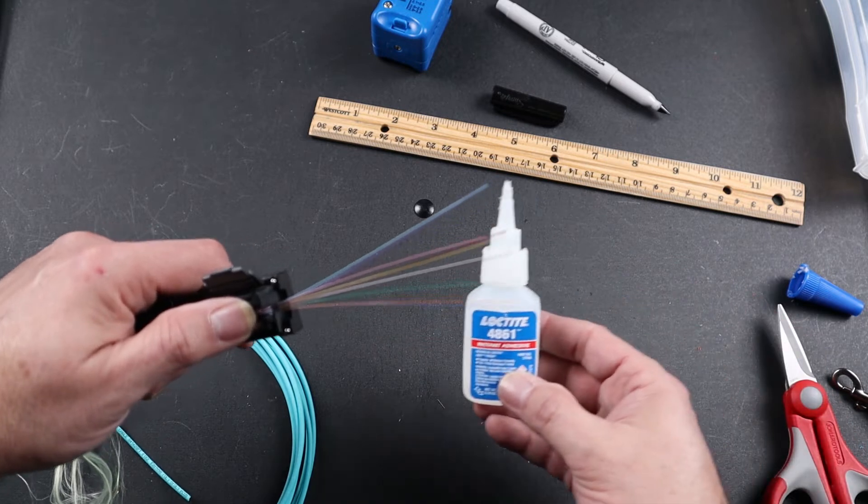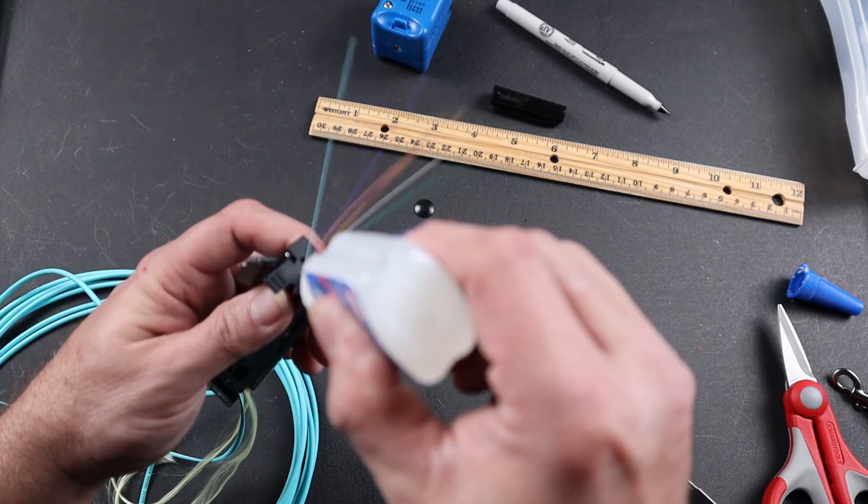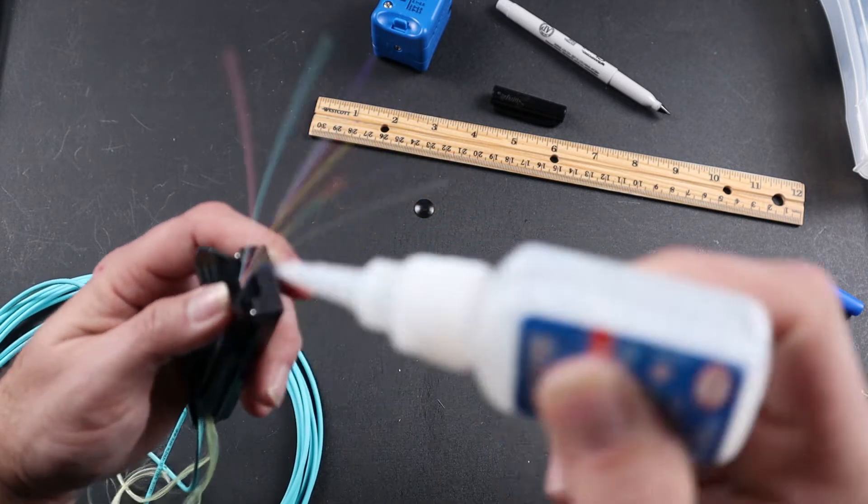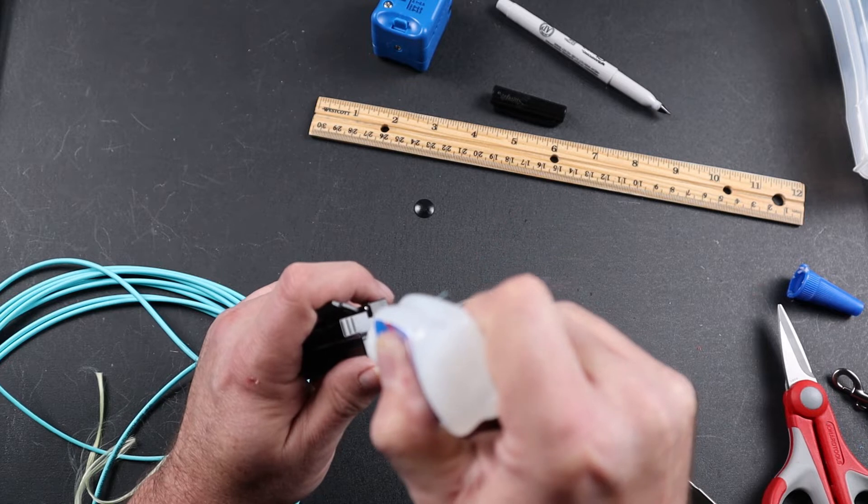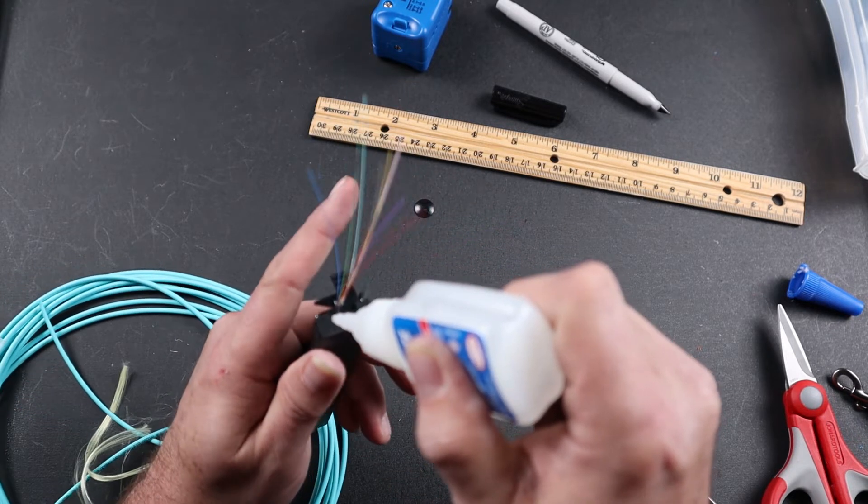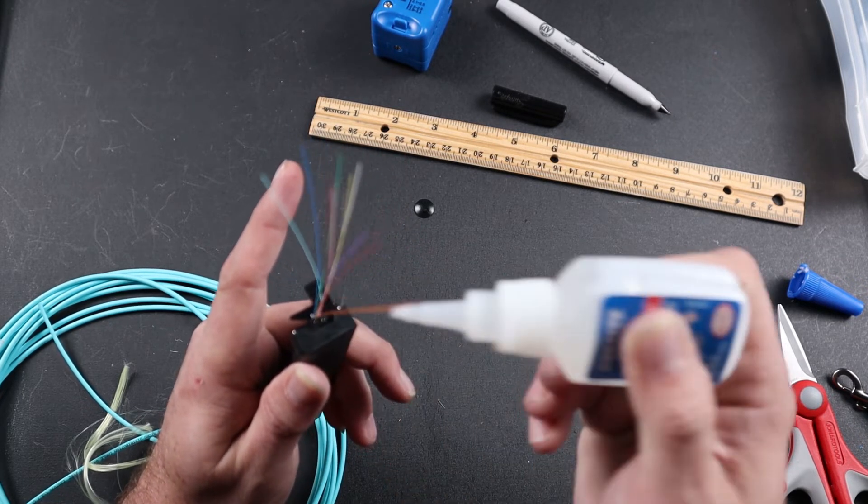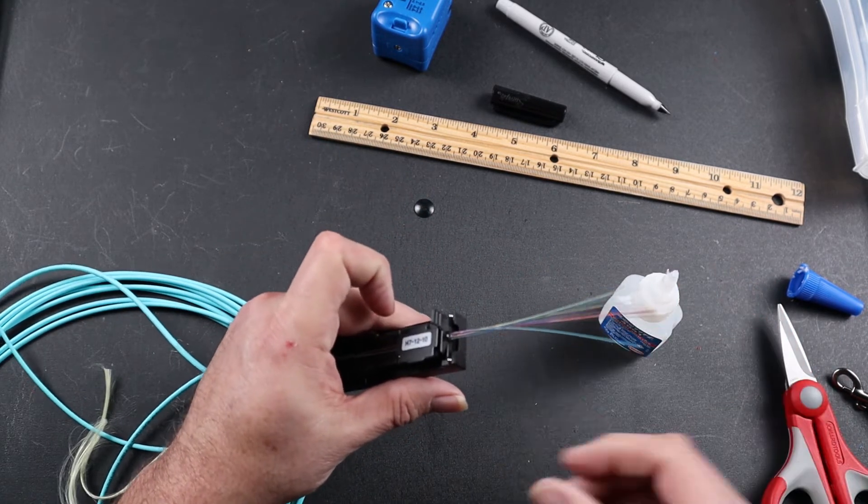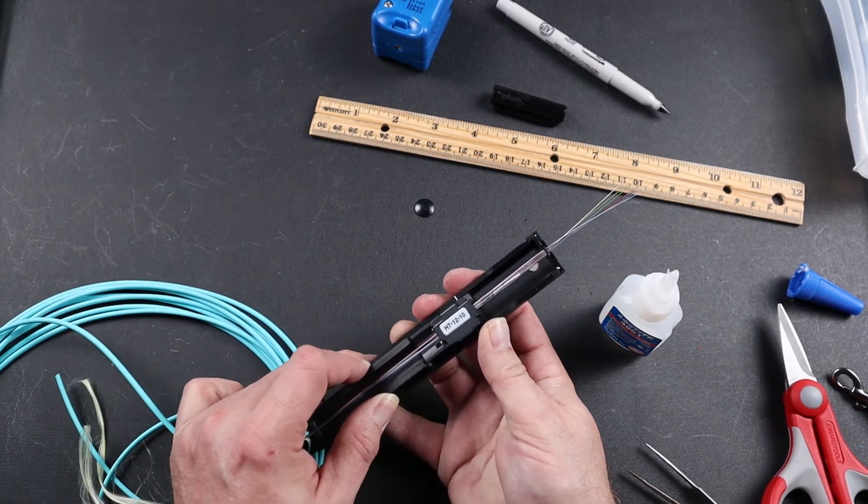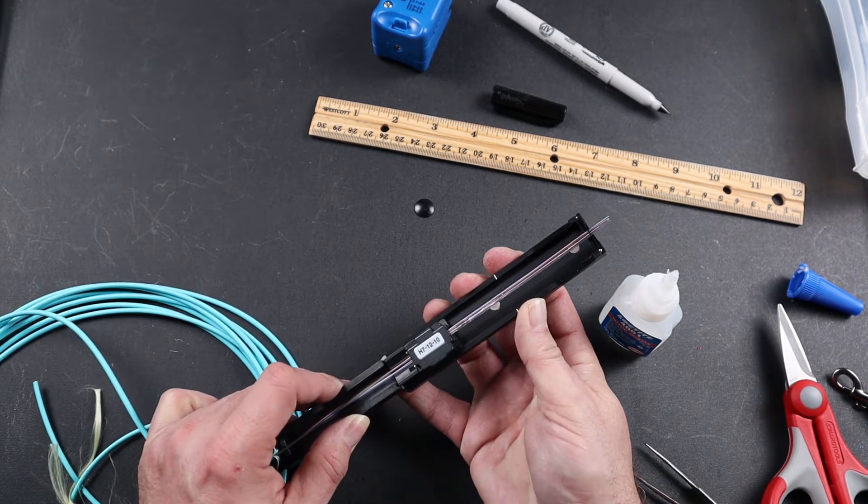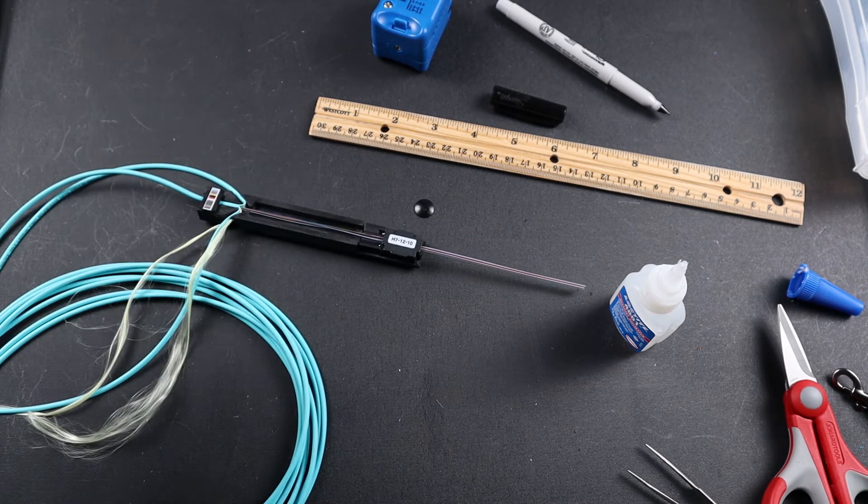Next, apply your Loctite 4861 to both sides of your holder. Close your fiber holder and then gently pull back your mainframe. Place down and allow to dry for 30 seconds.